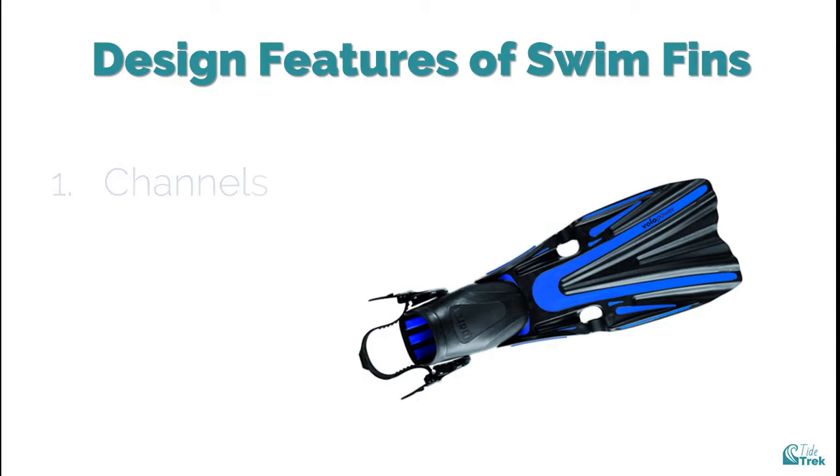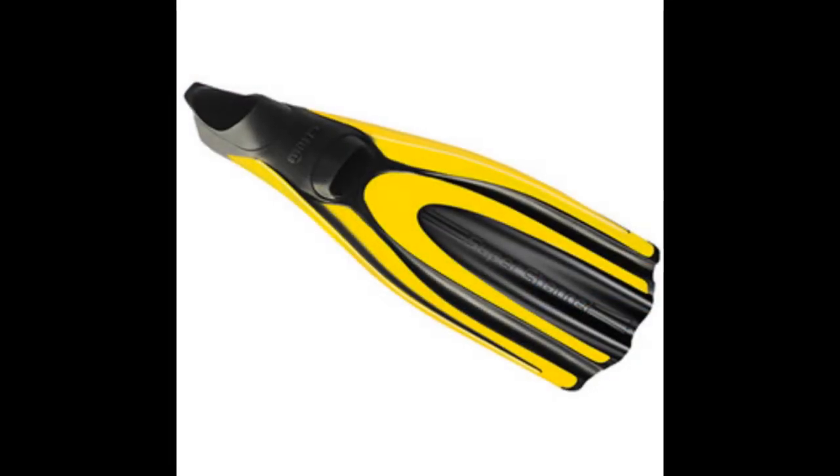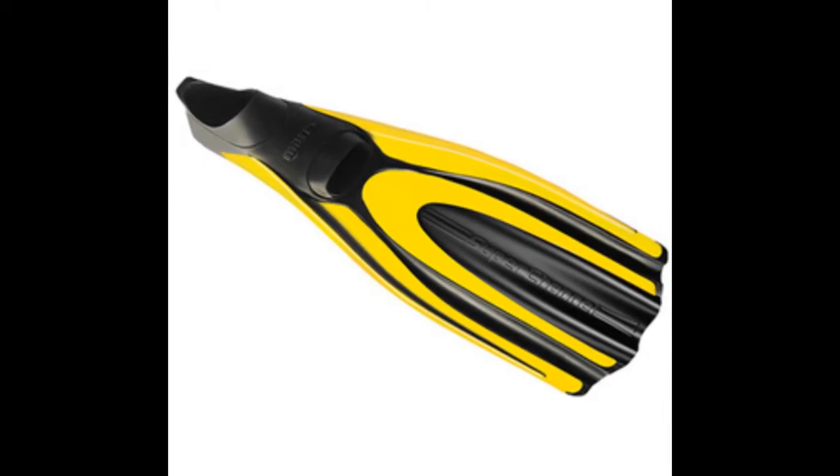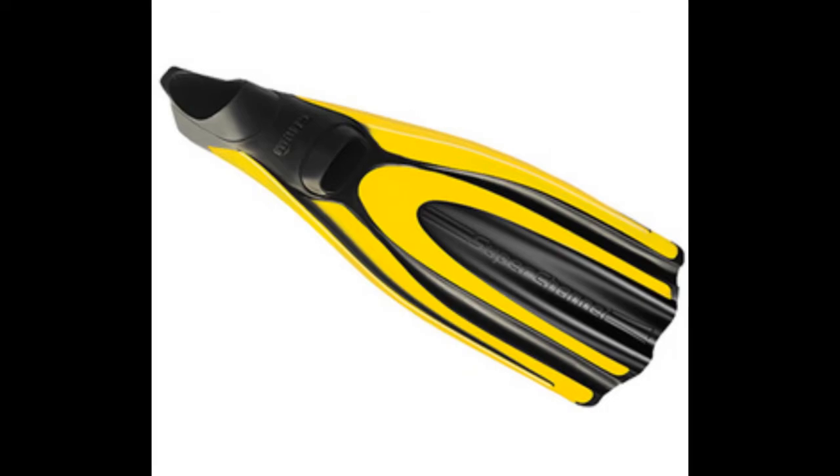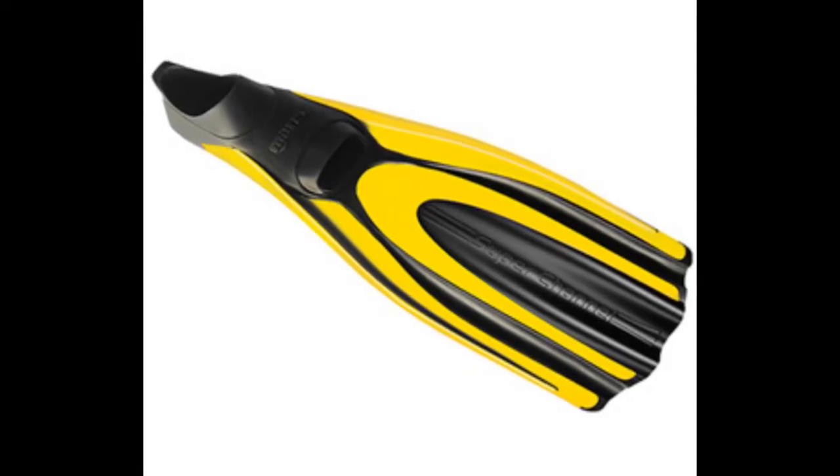Channels and rails. Many fins feature bolsters, rails, and channels that have been engineered to encourage water to run off the fin's edge. Ensuring that water runs off the edge in one direction helps to reduce turbulence and improve thrust efficiency. More force applied into the water backwards means more forward motion for you.